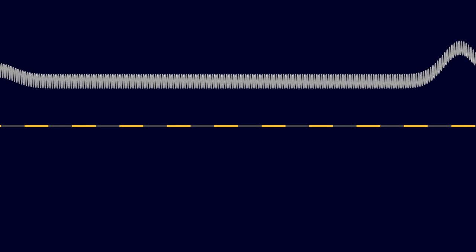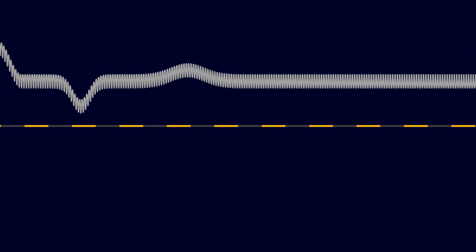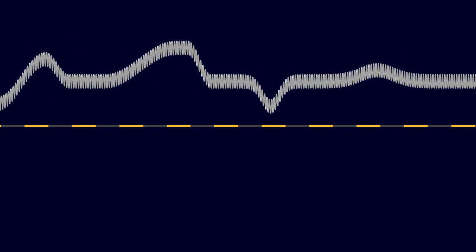Many waves have a characteristic speed. The size and shape of the disturbance does not affect how fast it travels. This allows us to talk about the speed of sound or the speed of light.